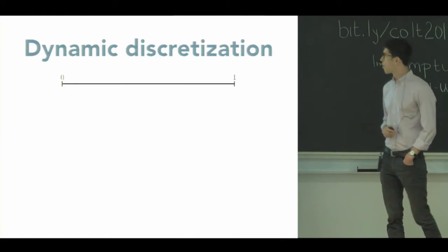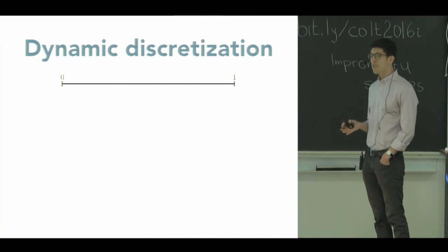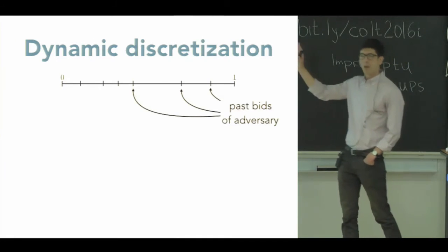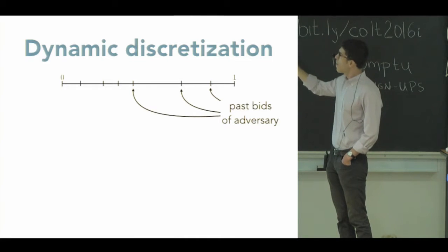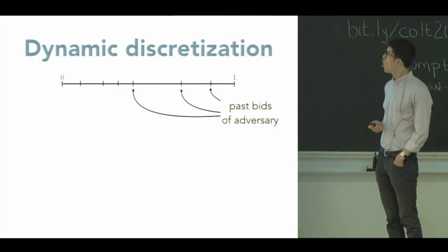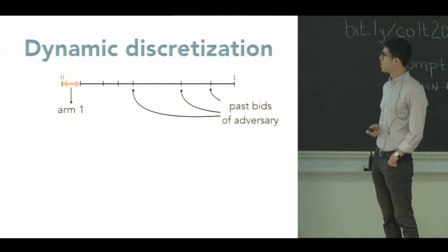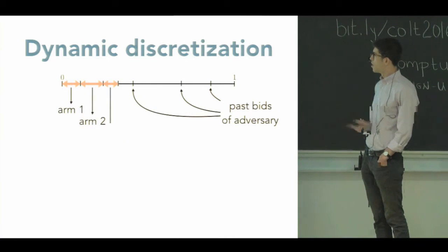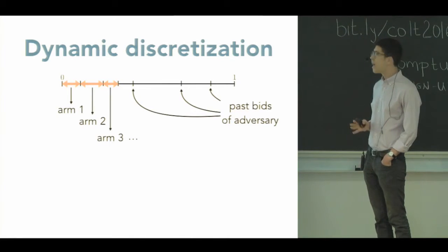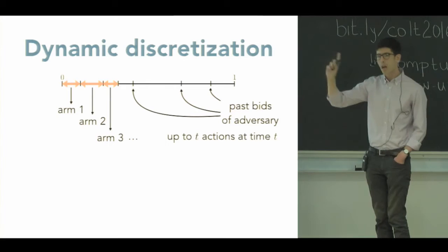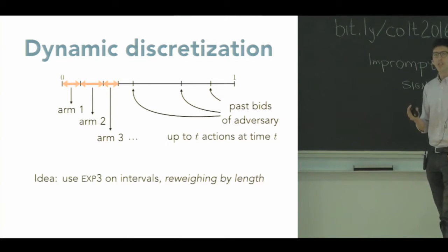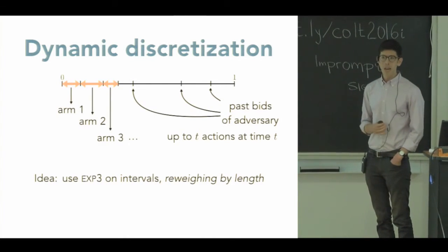What we need is something a little bit more clever. So we're going to try to discretize dynamically and use the fact that we see the opponent's bids to help us. So the opponent has made some bids in the interval before, and that cuts up the interval into a series of smaller intervals. We're going to view those intervals themselves as our actions. Playing on these arms, these actions, will mean playing uniformly in one of these intervals. So each of the past bids of the adversary cuts up the interval, and by time T, I have maybe up to T different actions that come from having been cut up over time.